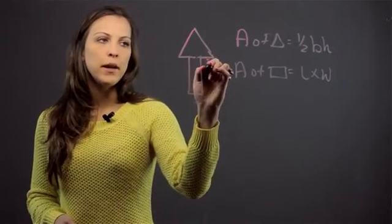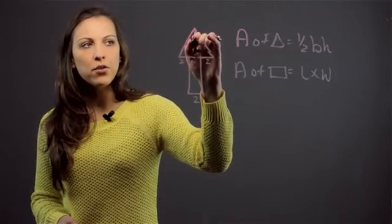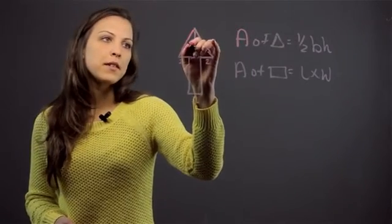If we fill in some dimensions here, let's say that we know this is two, we'll make each of these pieces two. Then we need to know the height of the triangle, or altitude, and we'll say that this is three.